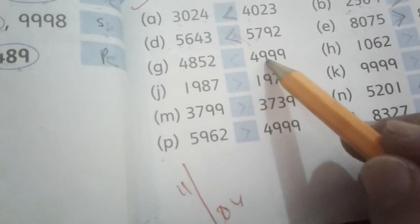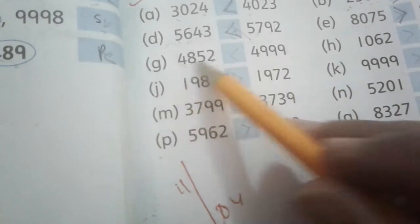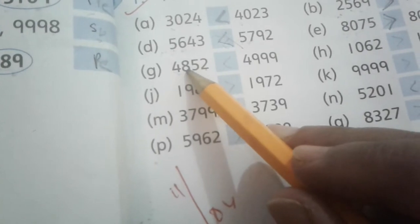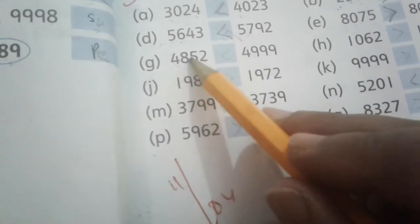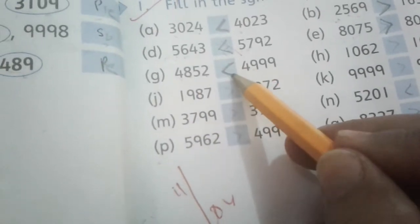4852 versus 4999. 4000 is the same on both sides. Next check the hundreds - 800 here and 900 here, which means 900 is bigger than 800, so the symbol goes this way.